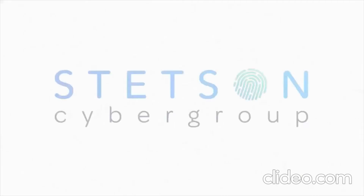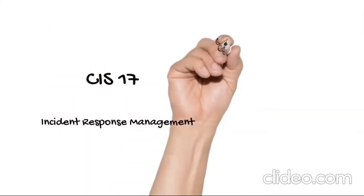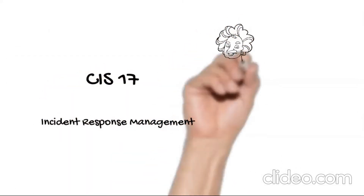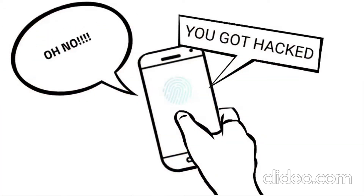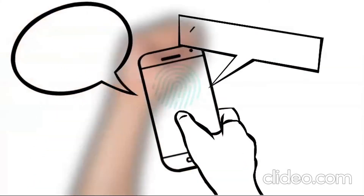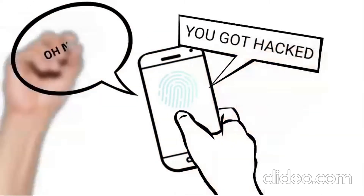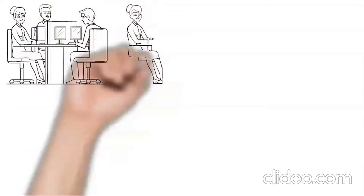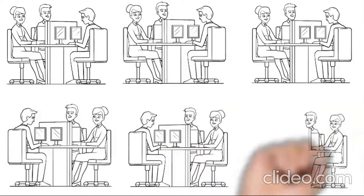Welcome to CIS 18 Explanations with Stetson Cybergroup. CIS 17: Incident Response Management. Scott's paraphone company got into a major attack. The IR team gets alerted on their paraphones, and each person then handles their responsibilities in responding to the incident.